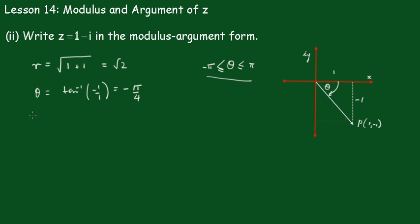So, now we can write in polar form z equals root 2 outside the cos of minus pi upon 4 plus i sine of minus pi upon 4.